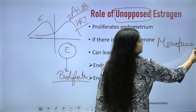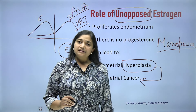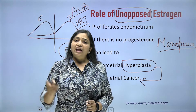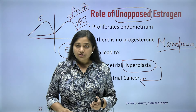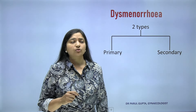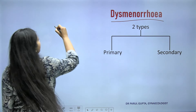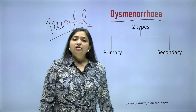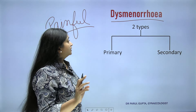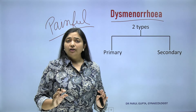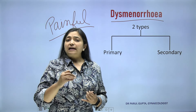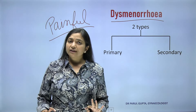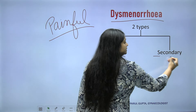The take-home message is: whenever we are treating a patient, we are not giving only estrogen in cases of intact uterus. If a patient has abnormal uterine bleeding, we will have to give progesterone definitely. In cases of hormonal replacement therapy — that is, menopause — if the patient had a natural menopause, the uterus is still inside, so we cannot give only estrogen. In cases of surgical menopause (hysterectomy), we can give only estrogen. But with an intact uterus, we must always supplement with progesterone.